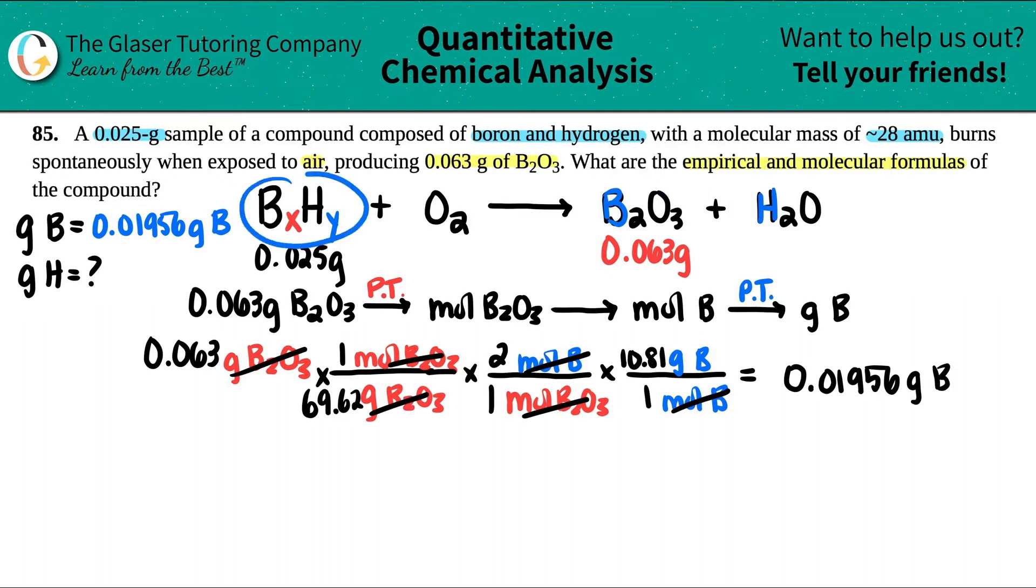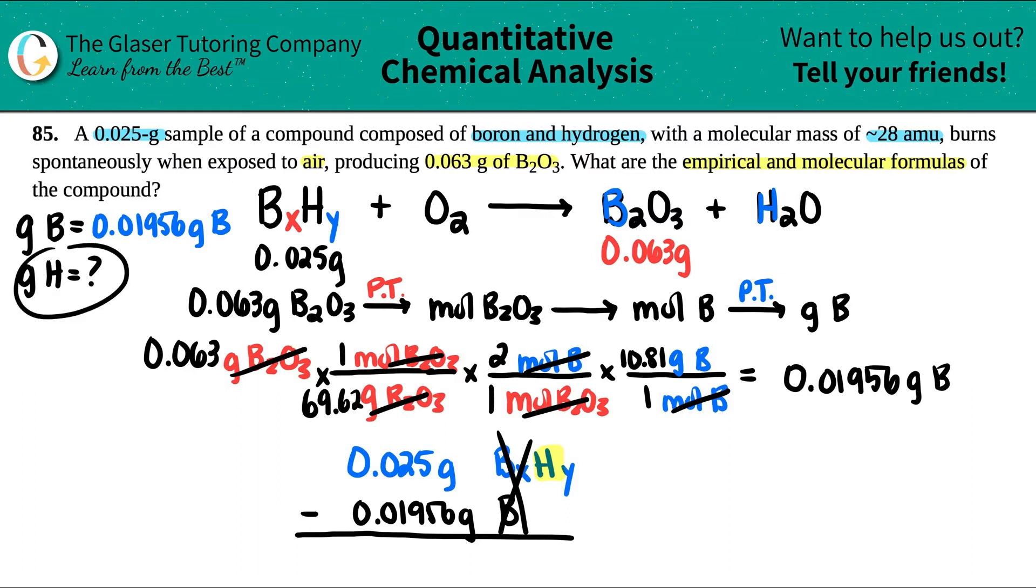How do I do that? Well, remember this compound is only boron and hydrogen. They told us that the total was 0.025 grams. If I have 0.025 grams of my whole compound BxHy, and I know all of the boron is 0.01956 grams, if I subtract these two, the boron goes away and look what you have left - that's just the mass of all the hydrogen. So let's subtract it. 0.025 minus 0.01956, and I get 0.00544 grams of hydrogen.